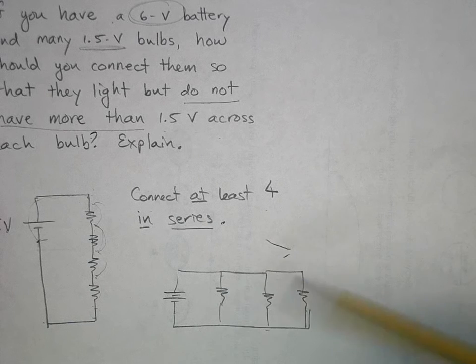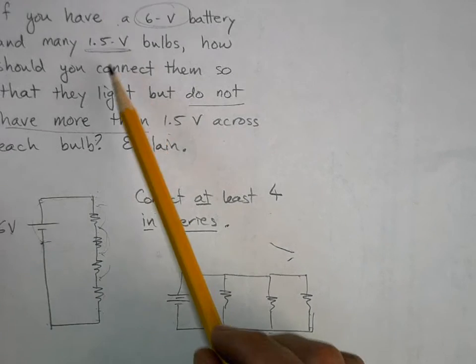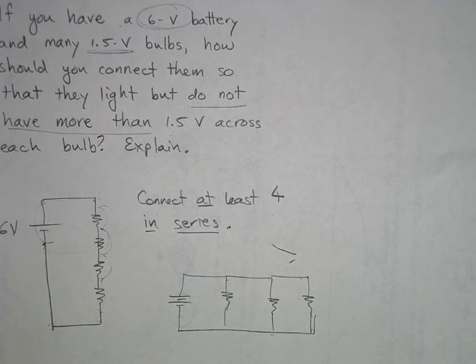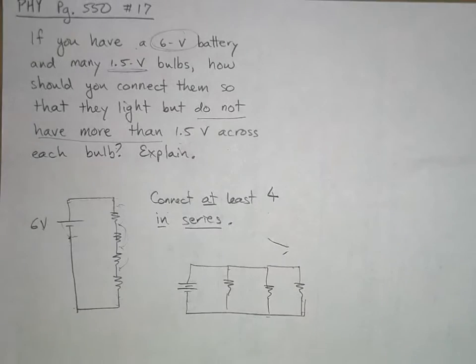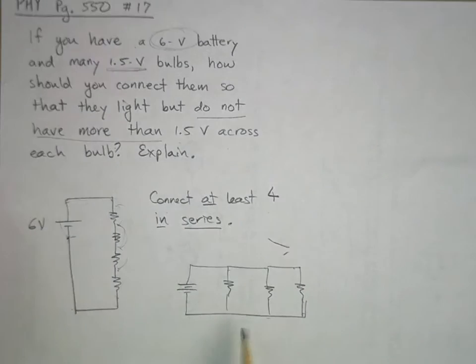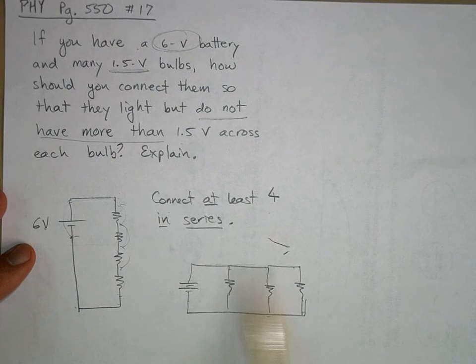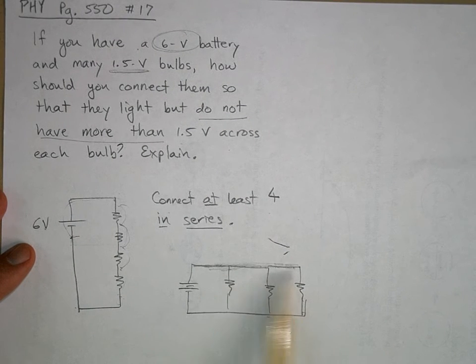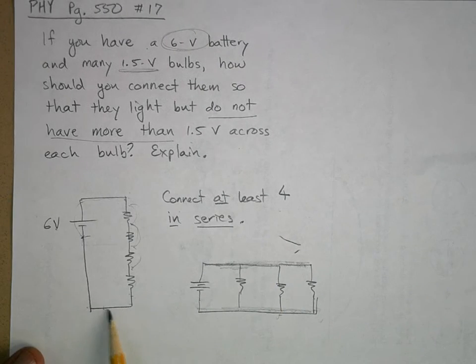Because they all have a 6-volt drop. If you do that, you're exceeding the 1.5 volts that they wanted you to have. You see why the parallel, this is in parallel. Resistors in parallel have the same voltage drop. So we want them hooked up in series.